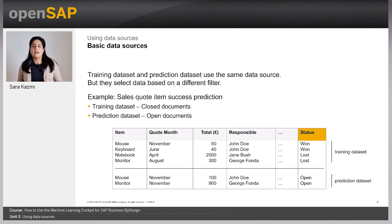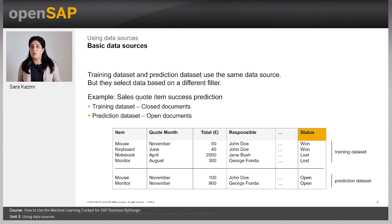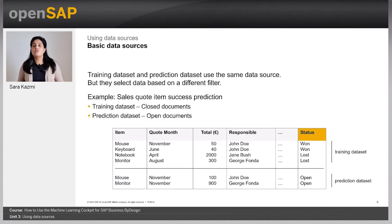Now let's talk about training and prediction datasets. In the previous unit, you learned that ML workflow needs two datasets: one used for training the ML model, called the training dataset, and another on which predictions are made. For MLC, we do not need to select two different data sources. MLC uses one and the same data source for both training and prediction. Training and prediction datasets are differentiated by different rows of the data. For example, in the sales quote use case, we train the ML model on rows corresponding to closed documents, since their business outcome — won or lost — is already known, and we make predictions on rows corresponding to open documents with unknown outcomes.